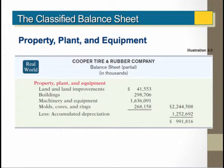Here is an example of property, plant, and equipment for Cooper Tire and Rubber Company. Notice what we have on land, buildings, machinery, mold, cores, and rings are the cost of the acquisition of those various assets. Then we subtract out the accumulated depreciation in order to get the net book value of those assets.